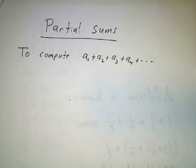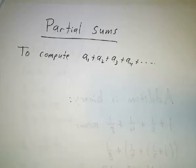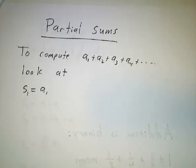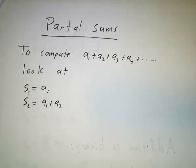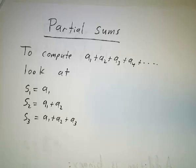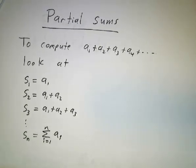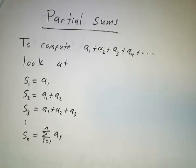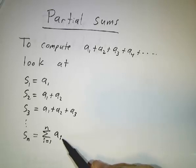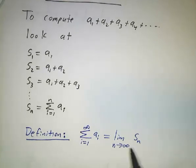If we want to add up an infinite number of numbers, we can't do it directly because we can only add two at a time. So we use the same running sum approach: S1 is the first number, S2 is the sum of the first two, S3 is the sum of the first three, and in general Sn is the sum of the first n numbers. We add up more and more terms, hoping to get closer and closer to a total. This is the first pillar of calculus — close is good enough. We approximate the infinite sum by a finite sum, and we define the infinite sum to be the limit of the finite sum.